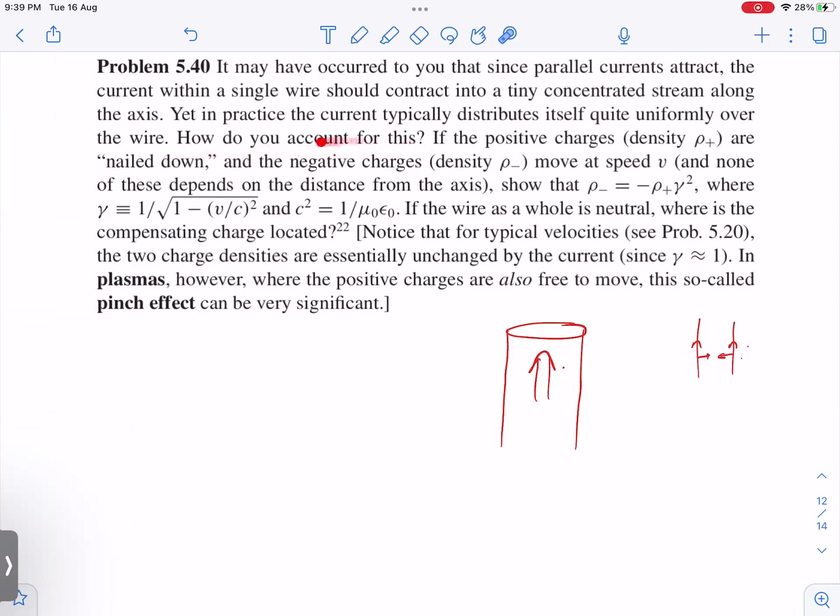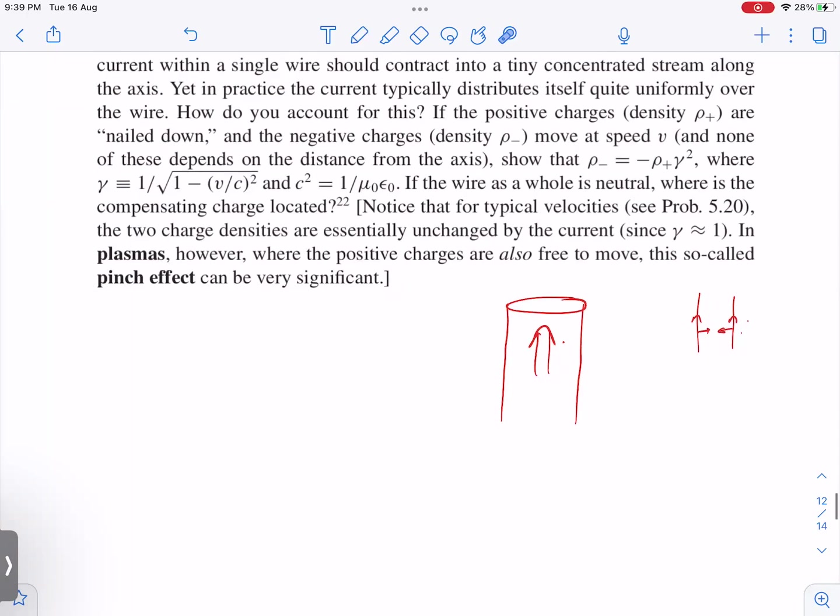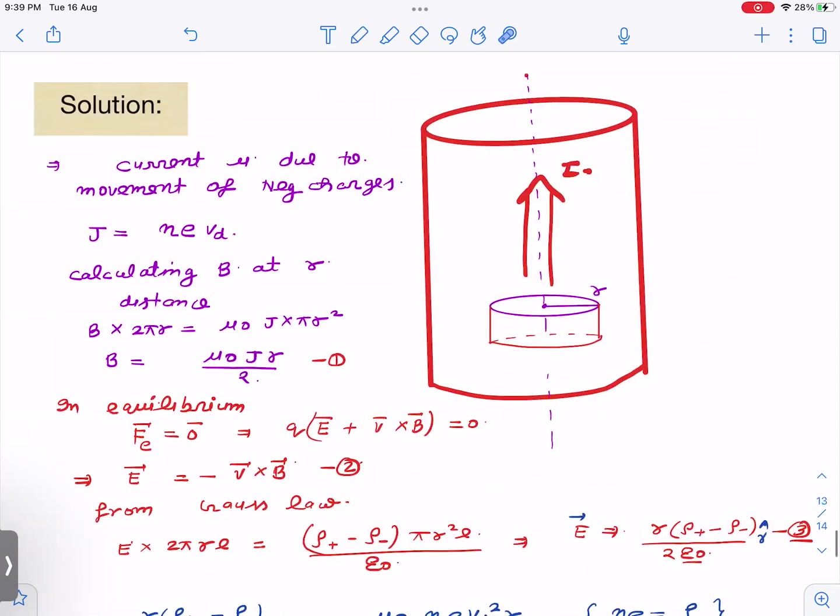We are going to analyze this effect. It is given you can take positive charge density as rho plus, negative charge density is rho minus, moving at speed V. We have to show rho minus equals rho plus times gamma squared where gamma is this quantity. Another question is if wire as a whole is neutral, where is the compensating charge located? This bracket thing we'll figure out later.